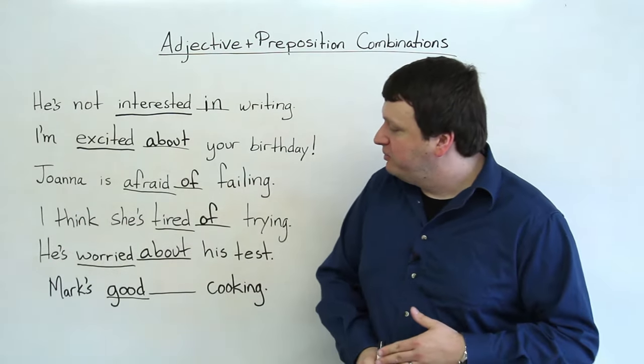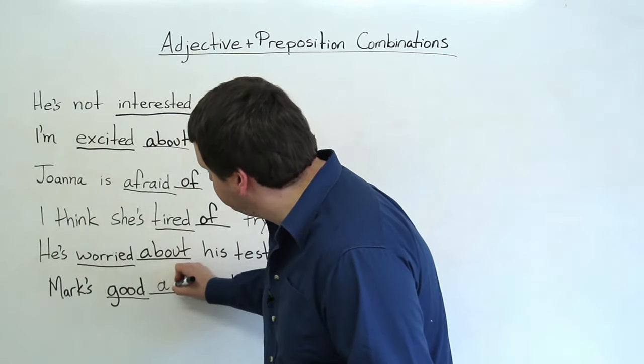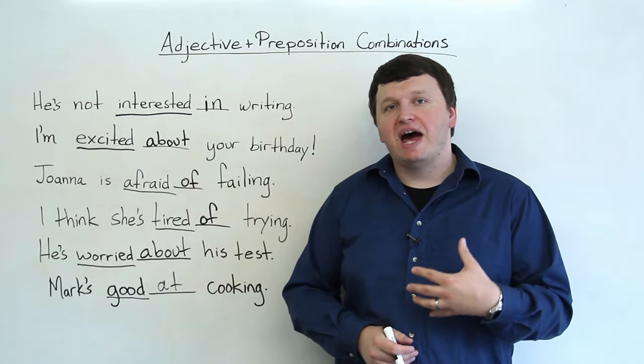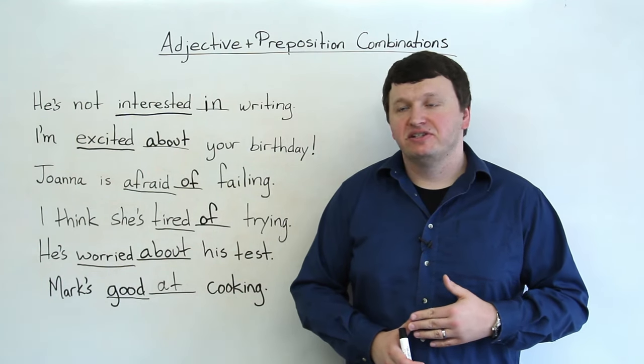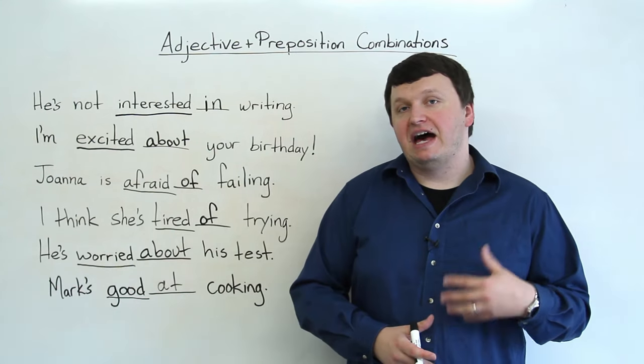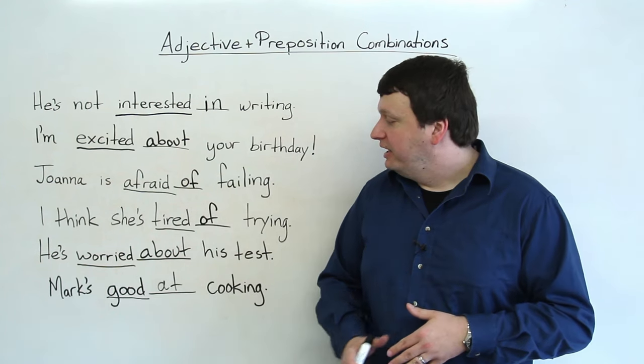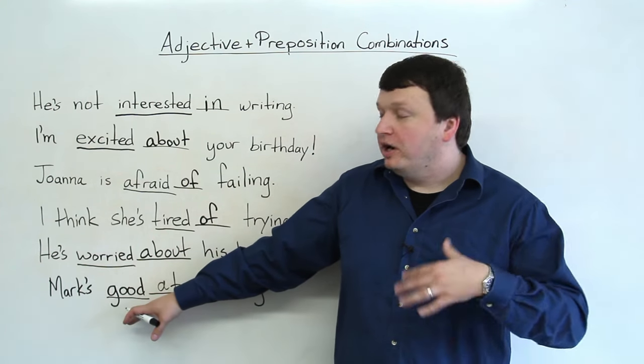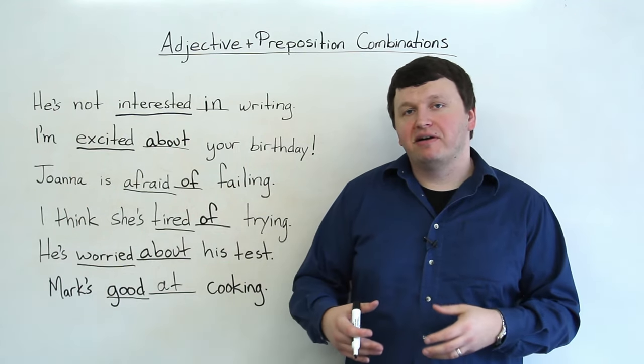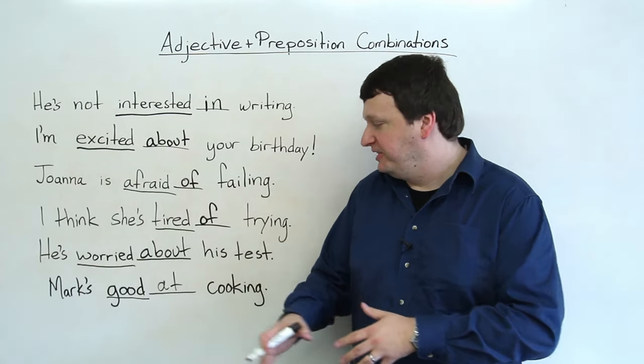And the last one, Mark is good at cooking. Mark is good at. Okay, this is a really common expression. It means you have ability in something. Okay, so if you have good ability, you are good at something. So Mark is good at cooking. Mark is great at cooking. Excellent at cooking. If you want to do the opposite, you can say a person is bad at something, or terrible at something, awful at something, horrible at something. Okay?